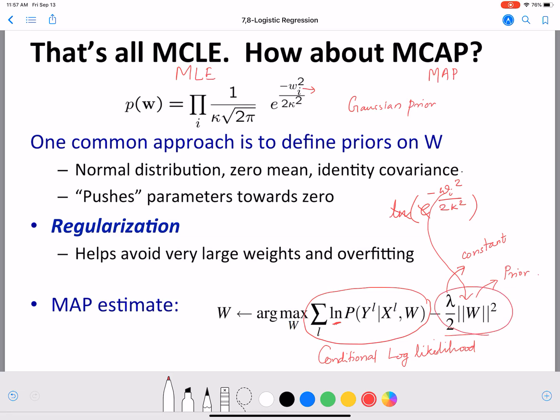Now we have this entire term that we are going to use to solve for W. So in this entire term, we have two terms here. One is coming from the conditional log likelihood. The other one is coming from the prior. And both these terms have W in them.